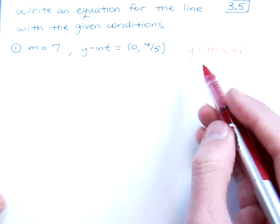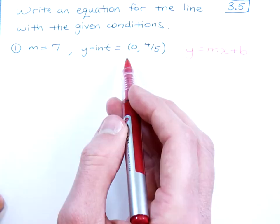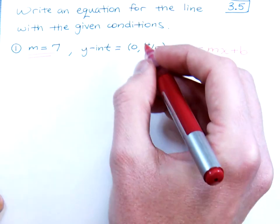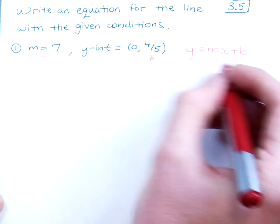Now remember, this is great for if you have the slope and if you have the y-intercept, and we happen to have both of those. You have your slope right here, and your y-intercept, the y-coordinate gives you the b that goes right here.